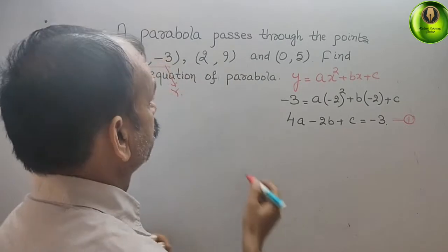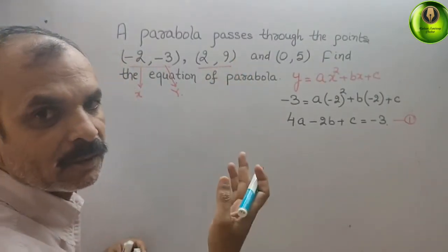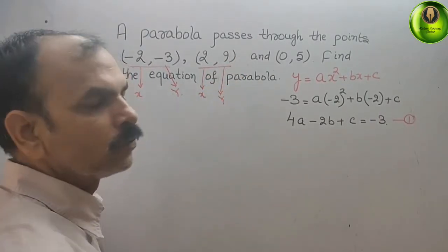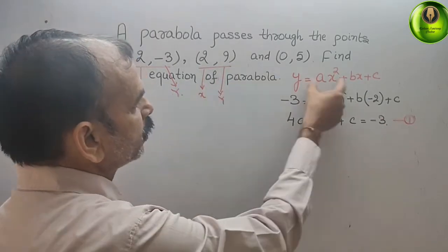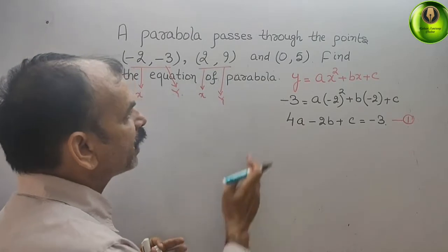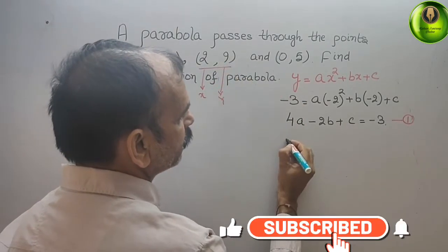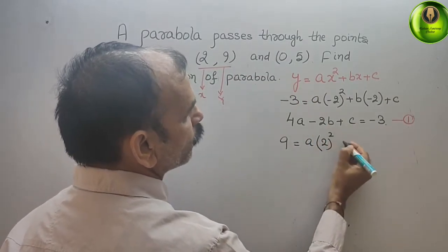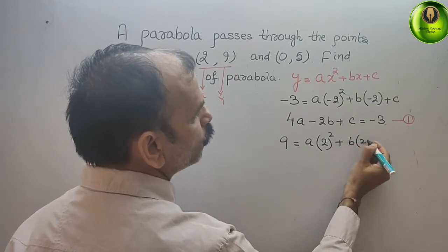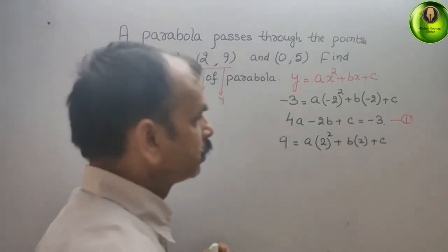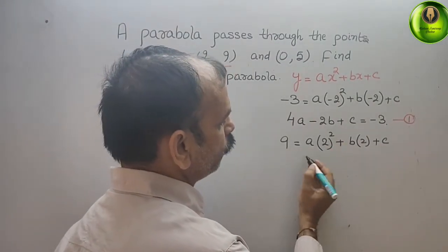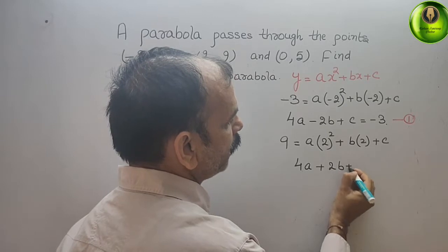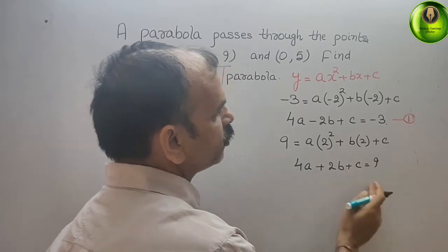Now go for the second coordinate: (2, 9). So 2 is your x and 9 is your y. Substitute these values into the standard form: 9 = a(2)² + b(2) + c. Solving, we get 4a + 2b + c = 9. This is your second equation.